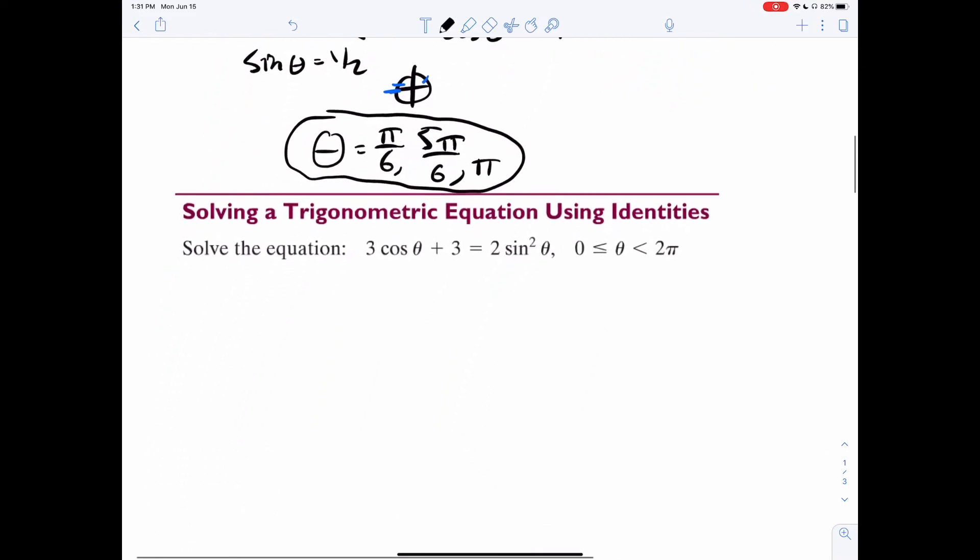Okay, two more examples. Solving a trig equation using identities. So first thing to note is look at the sine squared. And we have a cosine. So that's not going to work for now. We got to figure out what to do. So for cosine, there's not much we can do. We're just going to rewrite that. But sine squared, we can change that using our Pythagorean identity to one minus cosine squared like that.